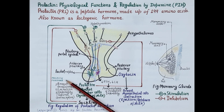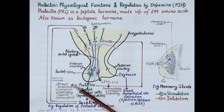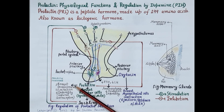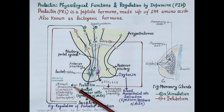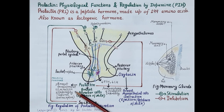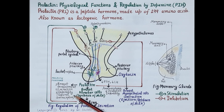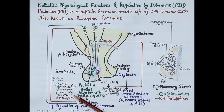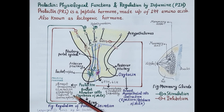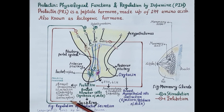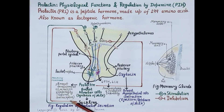Now let's summarize the physiological functions of prolactin. Increased prolactin during pregnancy induces the development of the breast. Prolactin also induces synthesis of milk and is essential for lactation. Very importantly, increased serum prolactin during pregnancy and lactation causes infertility, which is responsible for the physiological natural contraception seen in women several months after childbirth.